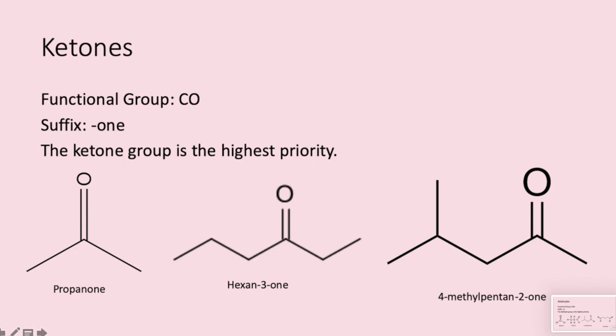In the second example there are a lot more carbons — if we count them there are six — so there are lots of different places the ketone group could go and we have to specify. Counting from the side that gives us the smallest number, the ketone group is on carbon number three, so we name this compound hexan-3-one. In the last example there are five carbons, so our answer will contain pentan-. The ketone group is on the second carbon, giving pentan-2-one. We also have a methyl group, which counting from the ketone is on carbon four, so we name the compound 4-methylpentan-2-one.